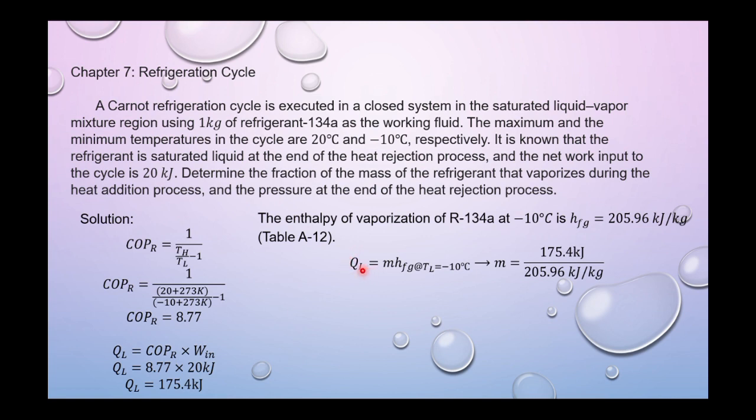To find the mass, QL equals mass times hfg at TL = -10°C. Mass equals 175.4 kJ divided by 205.96 kJ/kg, which is the hfg at -10°C. Our mass equals 0.852 kg.